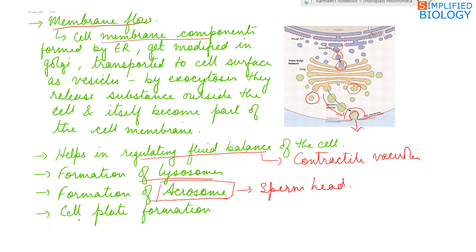Last, cell plate formation. During cytokinesis in plants, vesicles are released by the Golgi complex. They contain cellulose and pectin. These vesicles are arranged on the equatorial plate and fuse to form the cell wall dividing the cell into two daughter cells.